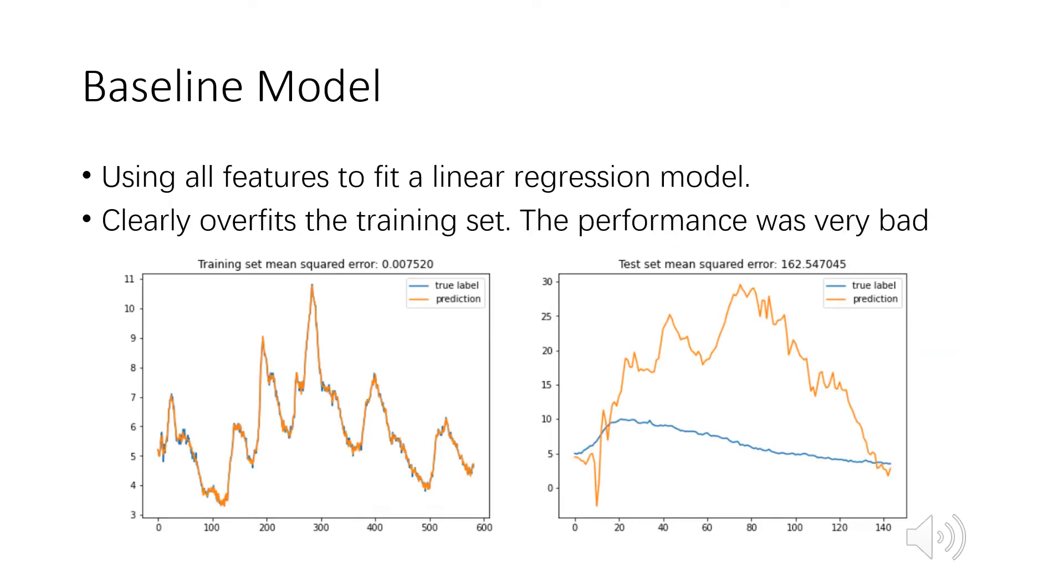We discarded all the features with more than 20% missing values, leaving 118 economic indicators. Our baseline model is just a simple linear regression with all 118 indicators. Note that here, we have about 600 training samples with 118 times 3 equals 354 features. The performance was bad, as it clearly overfits the training set, as our training set is small relative to the number of features.